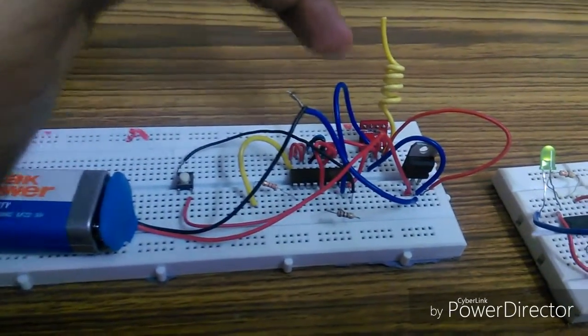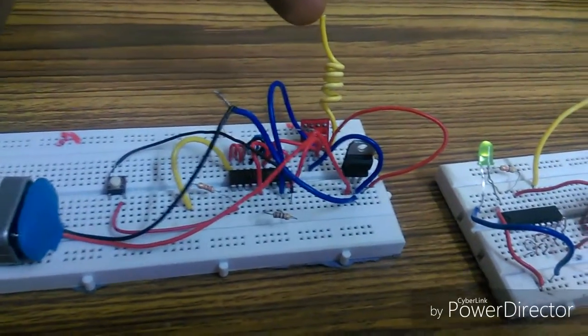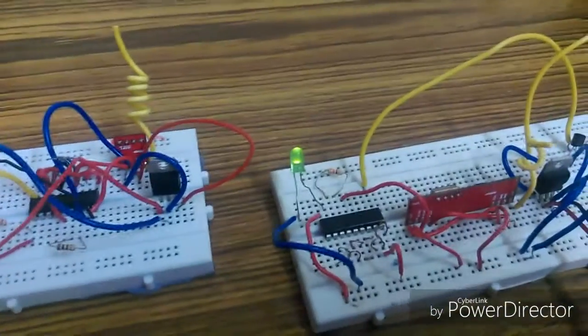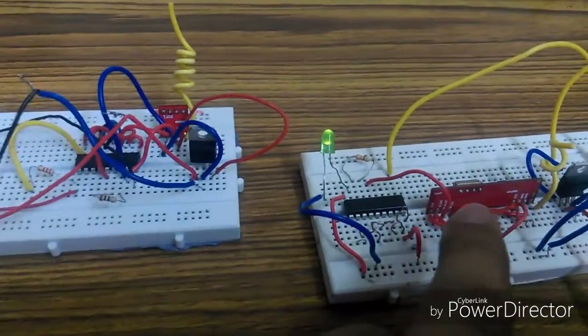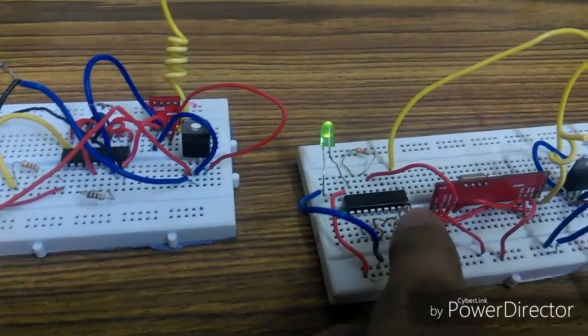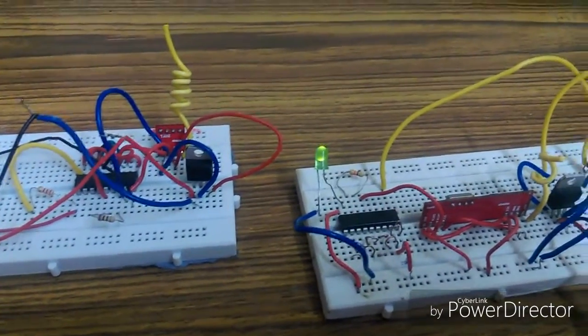At the receiver side, this receiver receives the serial data and sends it to the decoder IC. Then the decoder IC decodes the serial data and converts it into 12-bit parallel data.